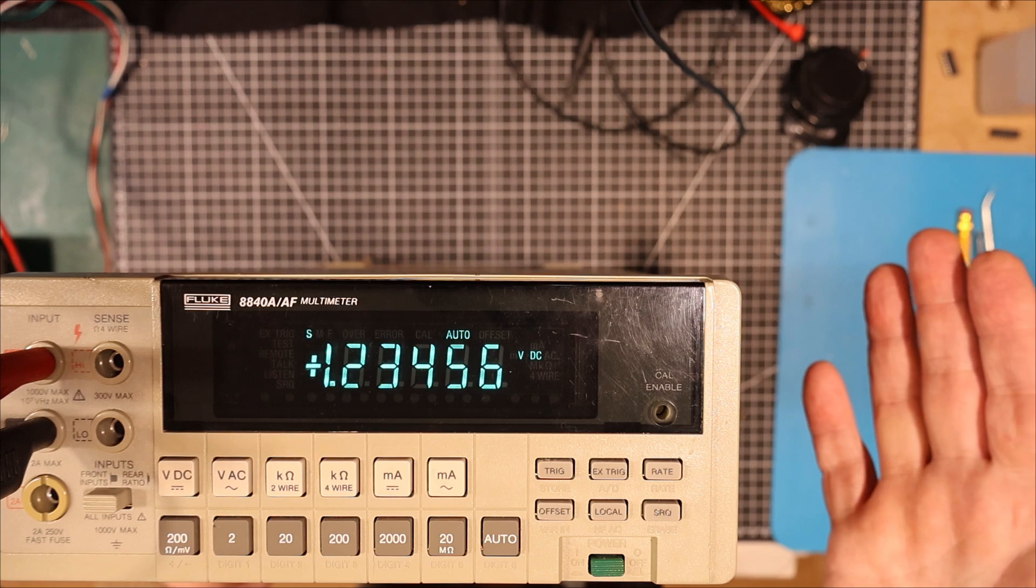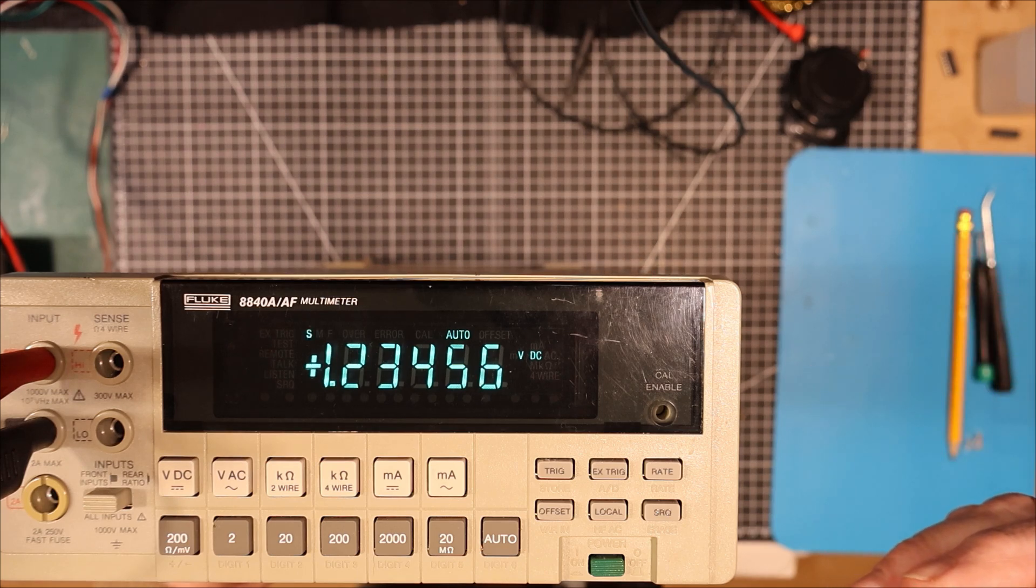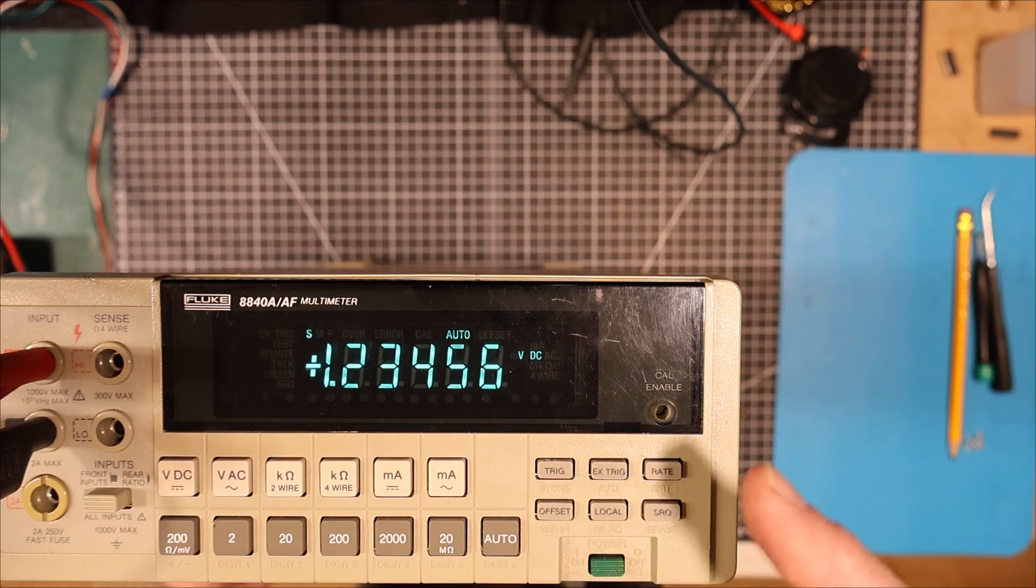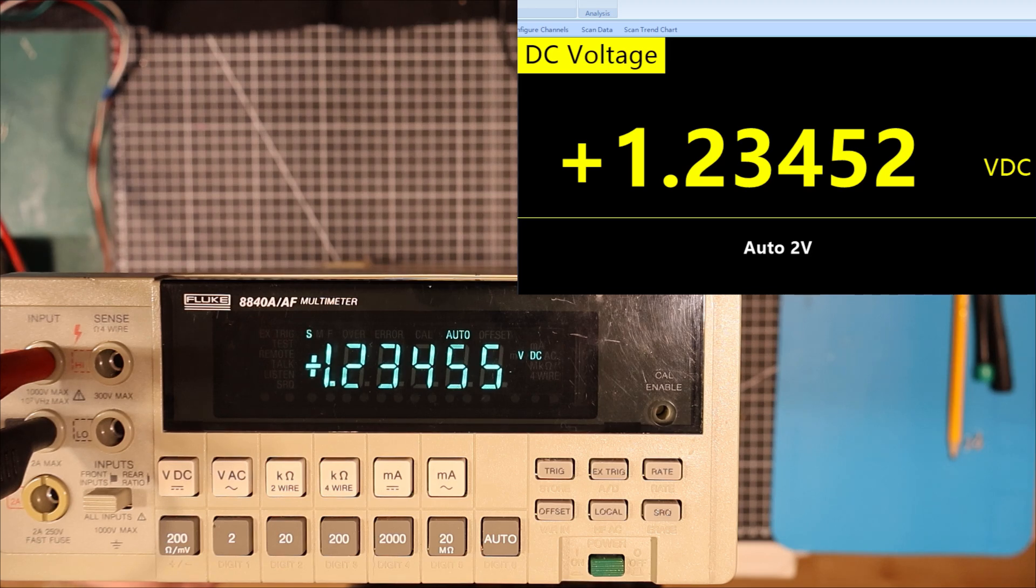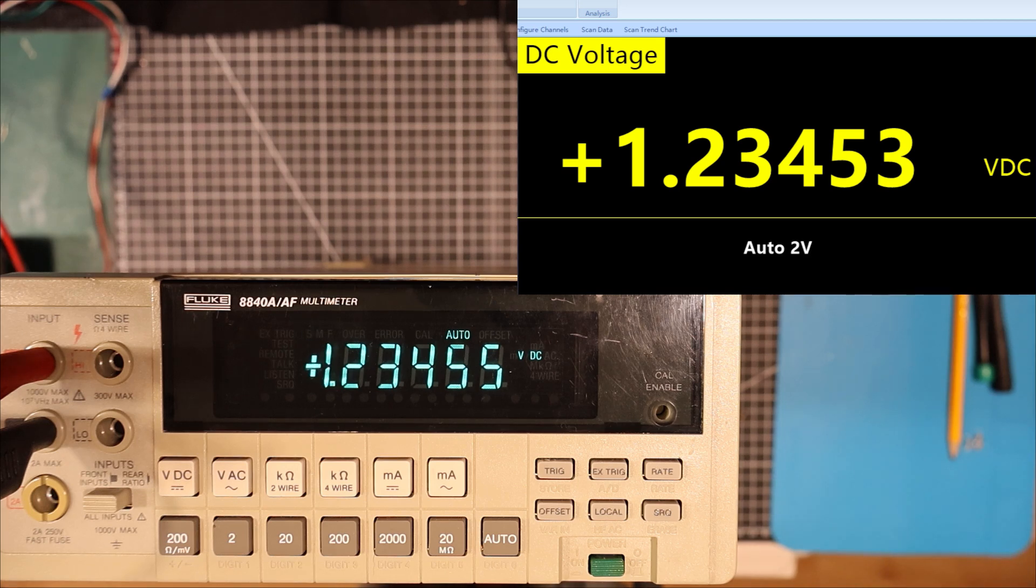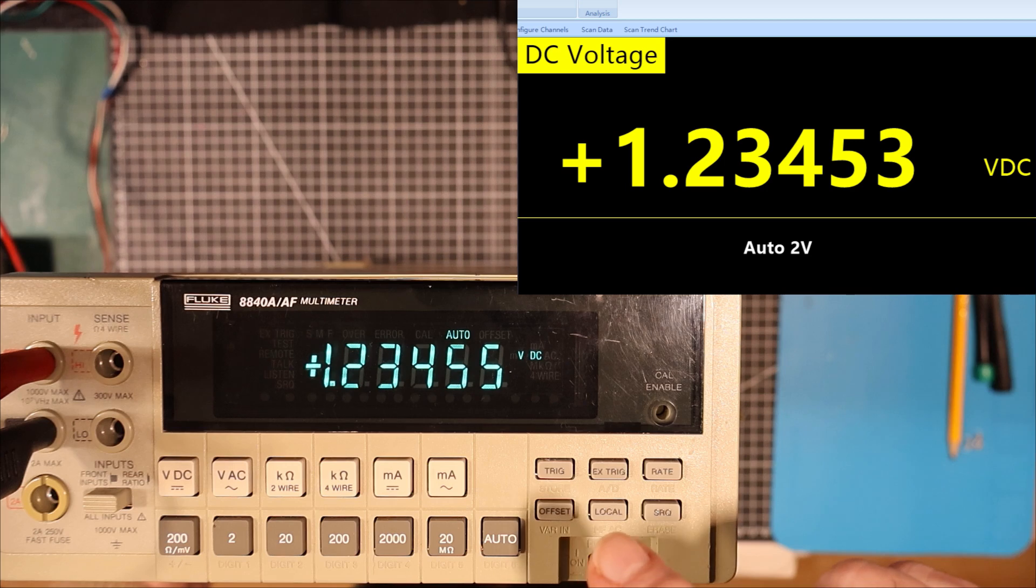I'm just going to compare it now briefly to my Signalent. So I've got coming into it here 1.23456 volts. Let me bring up the Signalent and see what the Signalent is showing us. So it looks like it's off the Signalent by a couple of counts. And I think that's well within the specifications of both of these devices. The Signalent might be off one way a little bit and the Fluke might be off another way a little bit. So things are boding really well for this. It's basically right on the money with the Signalent. Two counts I think. That's it.